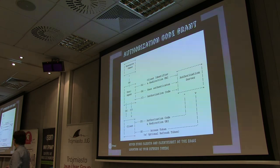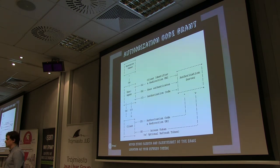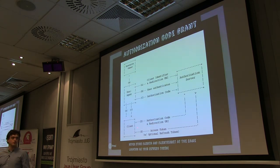A problem with the spec here is that the communication between the authorization server and client is completely unspecified. Although normally you'd implement this via a secure channel, the spec doesn't require it — so you can put whatever you want there and still be OAuth 2 compliant.